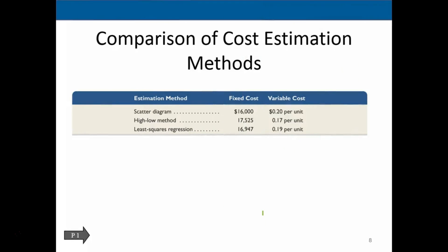But if we looked at the comparison, notice the comparison of these three methods. And we come up with slightly different numbers. The fixed cost here being 16 under the scatter diagram and the variable cost being 20 cents versus the high-low method where we have 17,525, the variable portion 17 cents, and the least square, which is 16,947 and the 19 cents. So we come up with slightly different methods in trying to determine the variable and fixed portion.